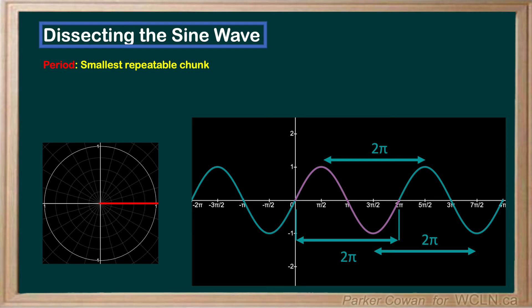While we're at it, let's classify another part of the sinusoid: the amplitude. The amplitude is defined as the distance from the center line to the peak or trough. This value is always positive. The amplitude can be found on the graph by subtracting the maximum value from the value at the center line of the wave. You can also subtract the maximum value from the minimum value and divide by 2.